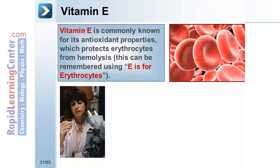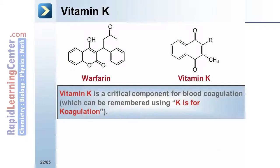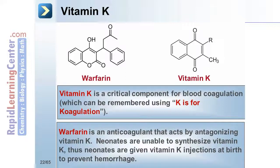Vitamin E is commonly known for its antioxidant properties, which protect erythrocytes from hemolysis — remembered using 'E is for erythrocytes.' In cases of vitamin E deficiency, there is increased fragility of erythrocytes as well as neurodysfunction. Vitamin K is a critical component for blood coagulation, remembered using 'K is for coagulation.' Warfarin is an anticoagulant that acts by antagonizing vitamin K. Neonates are unable to synthesize vitamin K, thus they are given vitamin K injections at birth to prevent hemorrhage.